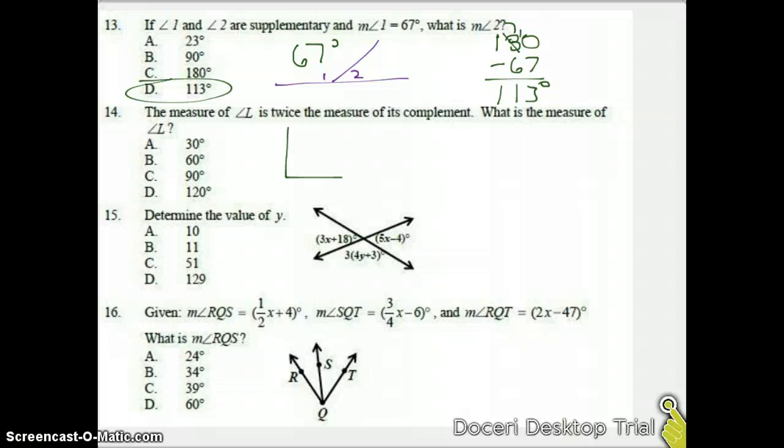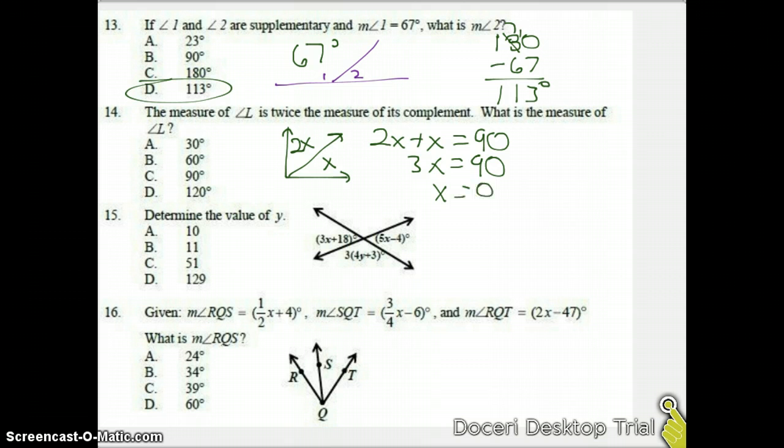For number 14, we have the measure of L is twice the measure of its complement. So if I have L and its complement, I have X, and let's think of it as 2X, because whatever its complement is, it's going to be twice that amount. Now we know if it's a complement, it has to do with complementary. So we're going to say 2X plus X equals 90. So I get that 3X equals 90, and X equals 30. So I got 30 and 60. Notice 30 and 60 are both multiple choice answers. We've got to make sure we pick the correct one. So if L is twice the measure of its complement, it is the bigger one. We're going to go with 60.